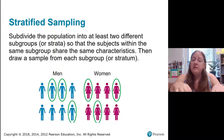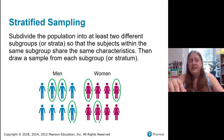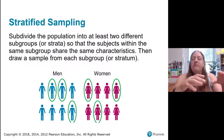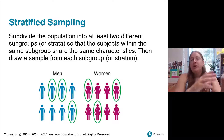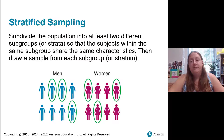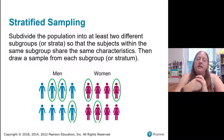In stratified sampling, we subdivide the population into at least two different subgroups — for example, male/female, freshmen/sophomores/juniors/seniors, transfer students, or race. We split people into these groups based on some common characteristic, and these groups are called strata. We then draw our sample from each of the subgroups, making sure we have the same representation from each stratum.